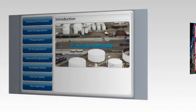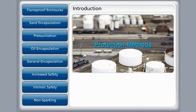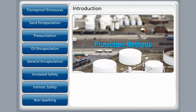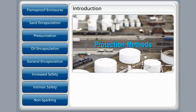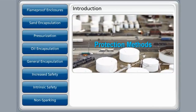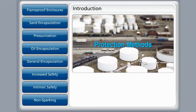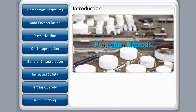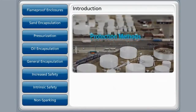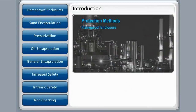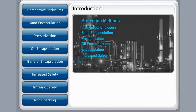Let's take a look at each method of protection and its general application. To ensure safety, equipment is placed in protective level categories. Category 1 is the highest safety level, making category 3 the lowest risk and safety level. The general eight protective methods are: flame-proof enclosures, sand encapsulation, pressurization, oil encapsulation, general encapsulation, increased safety, intrinsic safety, and non-sparking.